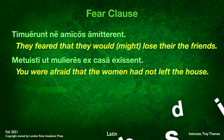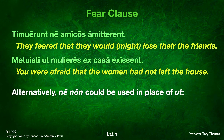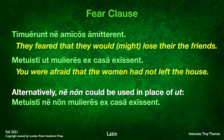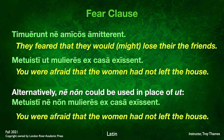Alternatively, sometimes Romans would use ne non in place of ut. This yields the exact same translation: metuisti ne non mulieres ex casa exissent. Even though we have ne, it has the non attached — a kind of double negative that functions as a negation. You were afraid that the women had not left the house. So ut can be replaced with ne non.